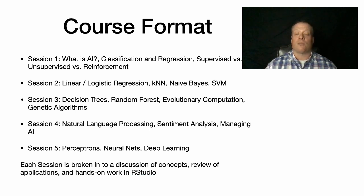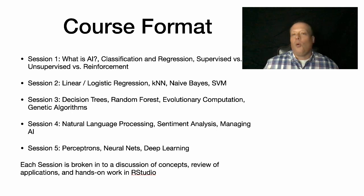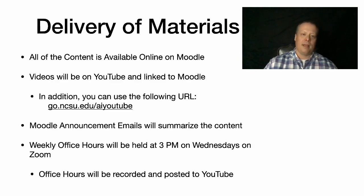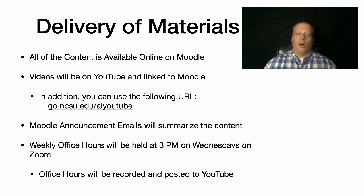Session three gets into decision trees, random forests, evolutionary computation, and genetic algorithms. Session four talks about natural language processing, sentiment analysis, and managing AI — in some ways it's a more applied session than the others. Session five is going to talk about perceptrons, neural nets, and deep learning, because I want to leave you with the kind of catchy words that a lot of people are using now in the AI space.